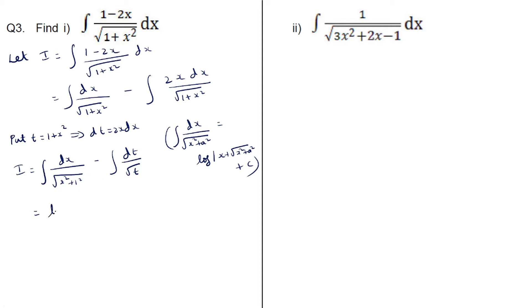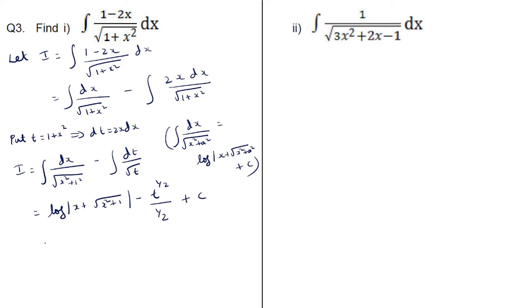This equals log mod of x plus root of (x squared plus 1), since a equals 1 here. Then minus integral dt by root t, which is integral t raised to minus half dt, giving t raised to minus half plus 1, which is t raised to half upon half, plus the constant of integration c.